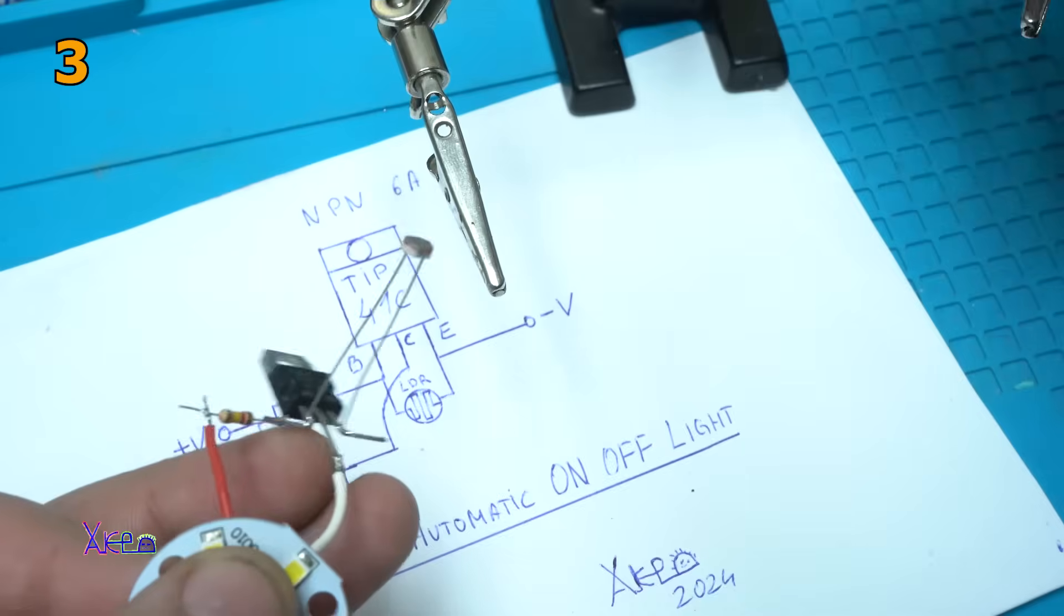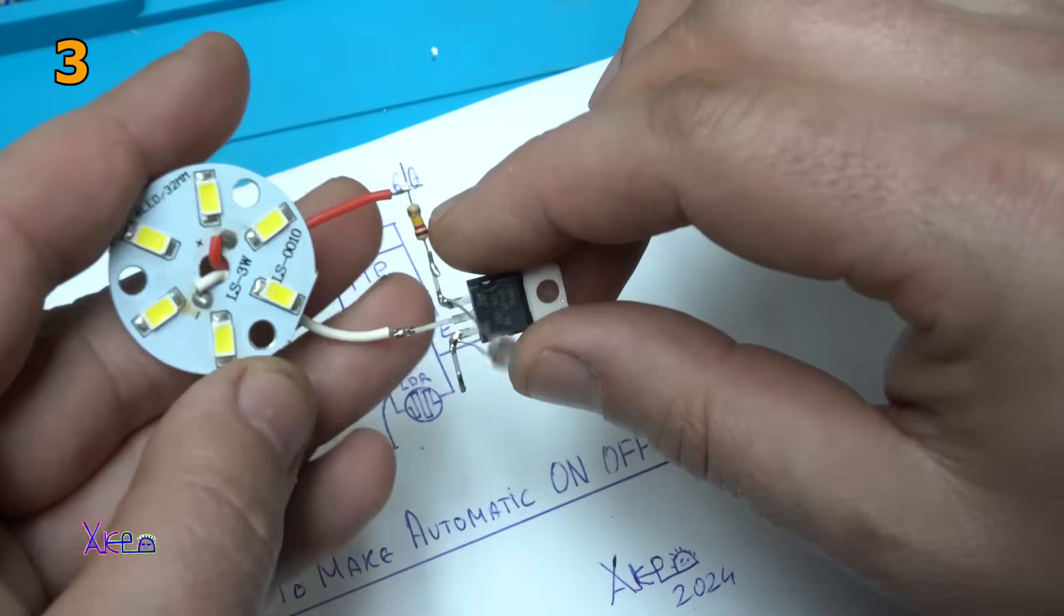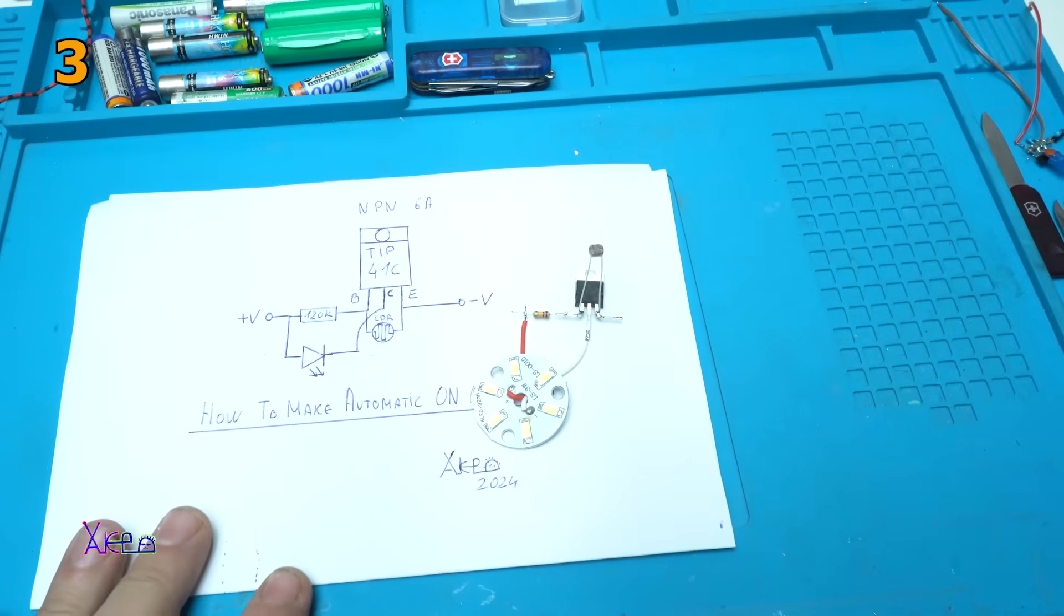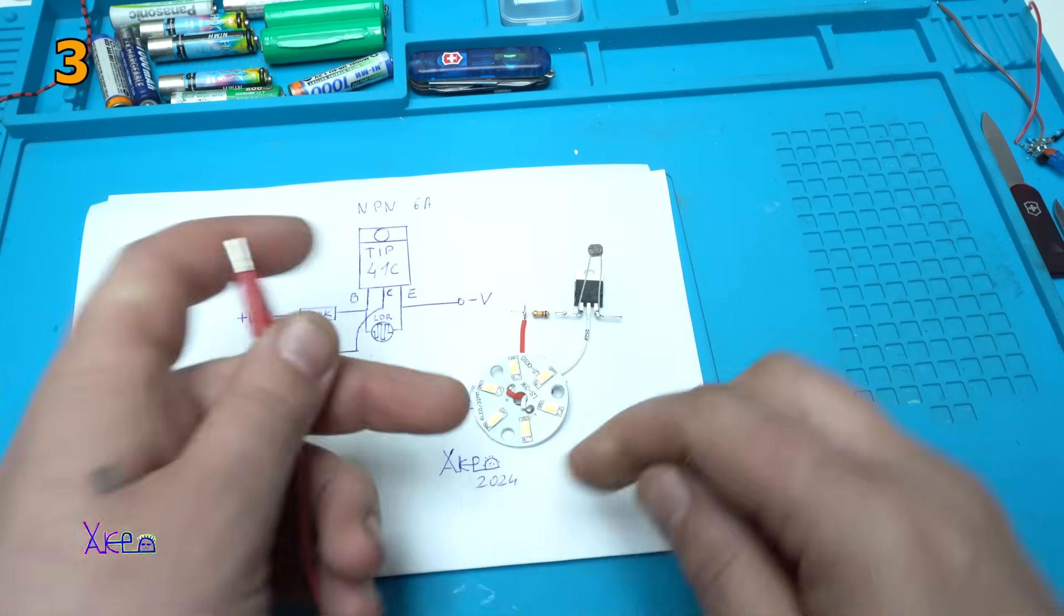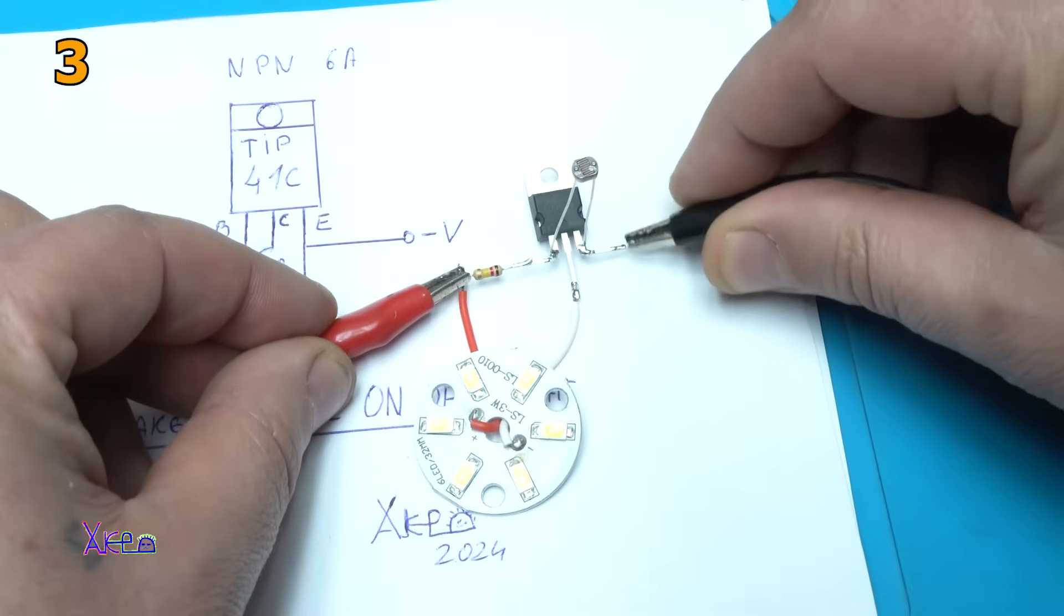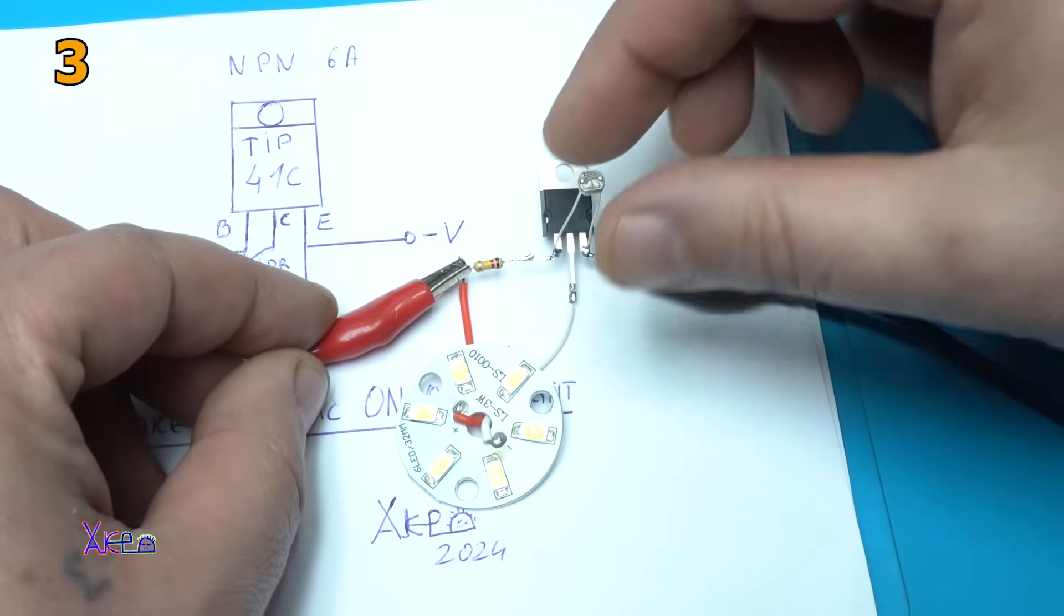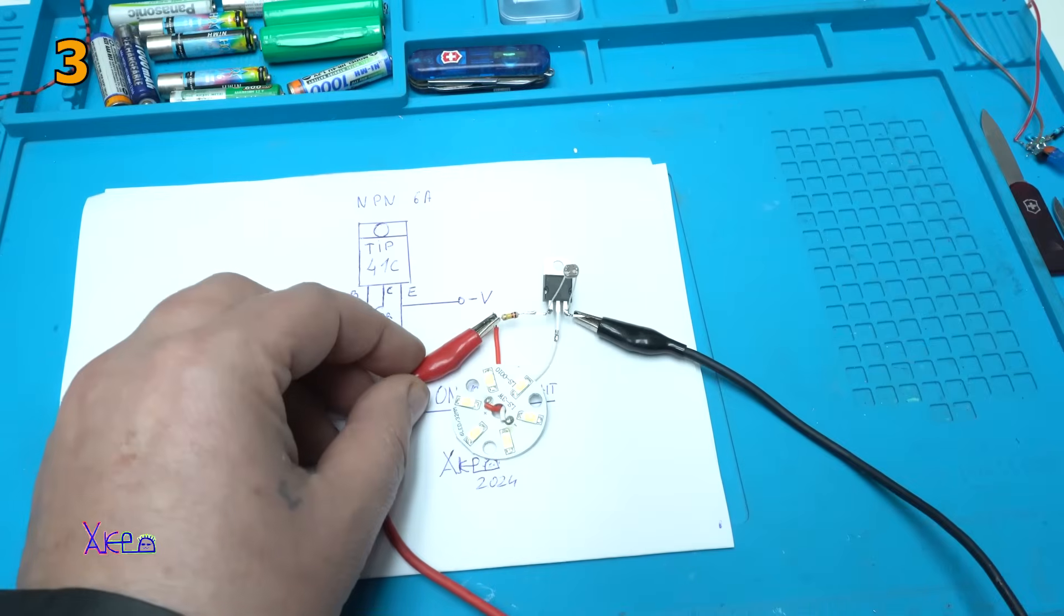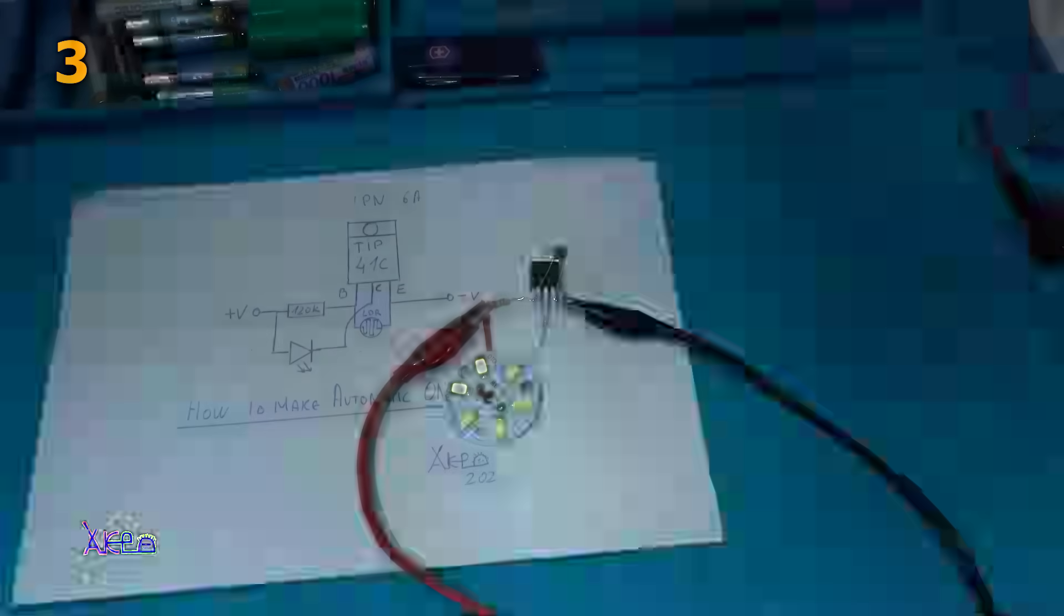Finished. Simple as that. Three components, automatic on-off light. You can use this for street light. This is the simplest way how to make it. I'm gonna try it. As I said, I'm using 12 volts. Set my power supply to 12 volts. On this point go 12 volts and on the emitter of the transistor go negative. And it's not working. Why? Because there is light. The photo resistor is still picking up the light and it's working.